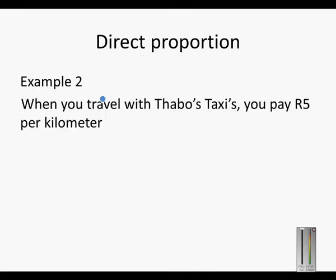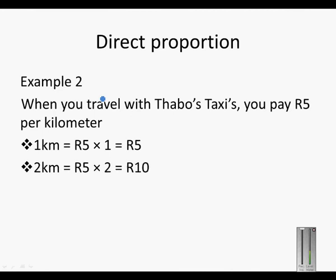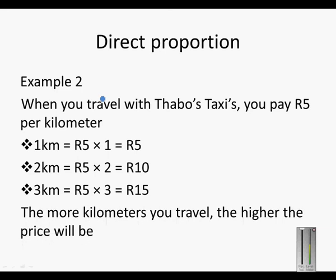Another example. When you travel with Thabo taxis, you pay 5 Rand per kilometer. So 1 kilometer is equal to 5 Rand times 1, which is 5 Rand. 2 kilometers is equal to 5 Rand times 2, which is 10 Rand. 3 kilometers is equal to 5 times 3, which is 15 Rand. So the more kilometers you travel, the higher the price will be.